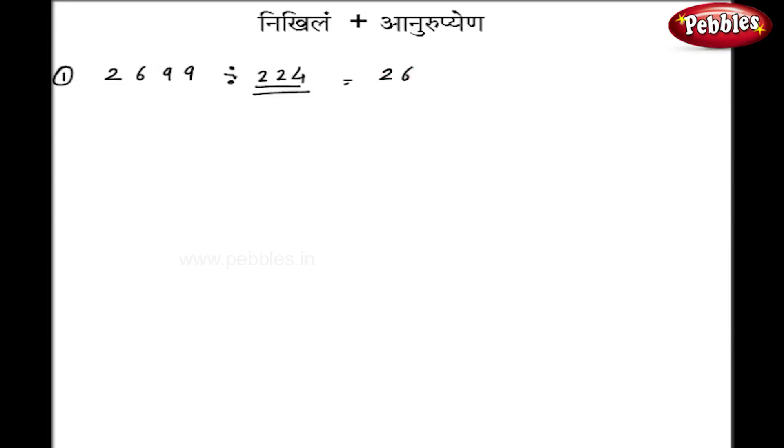I get 2699 divided by 224. Now this 224 I will modify in my way. That is, I will divide by 2. So now I will divide by 112. Now subtracting from base 100, I will get minus 12 here.